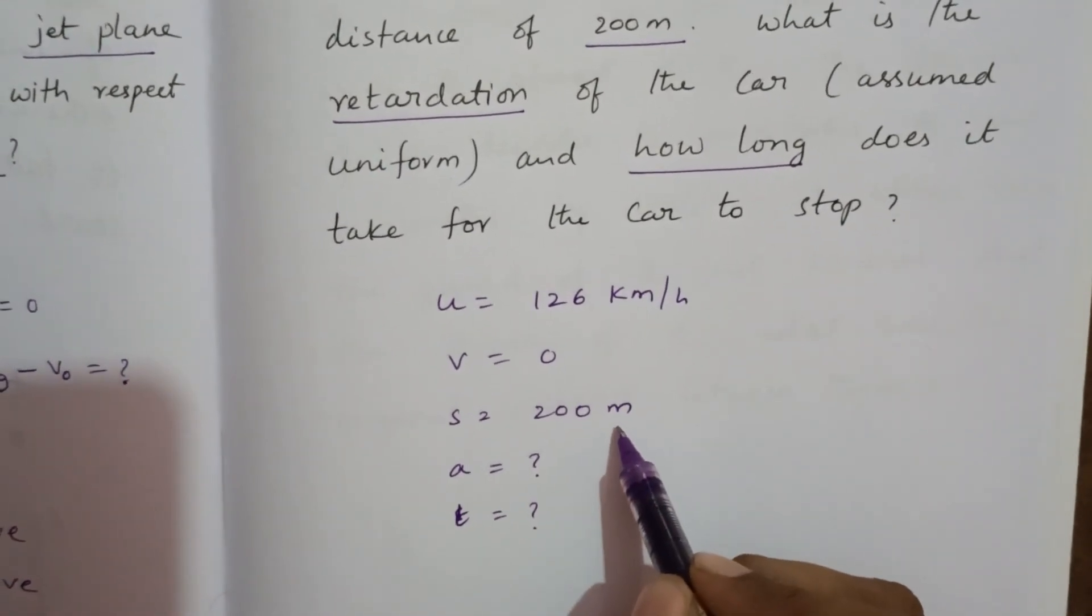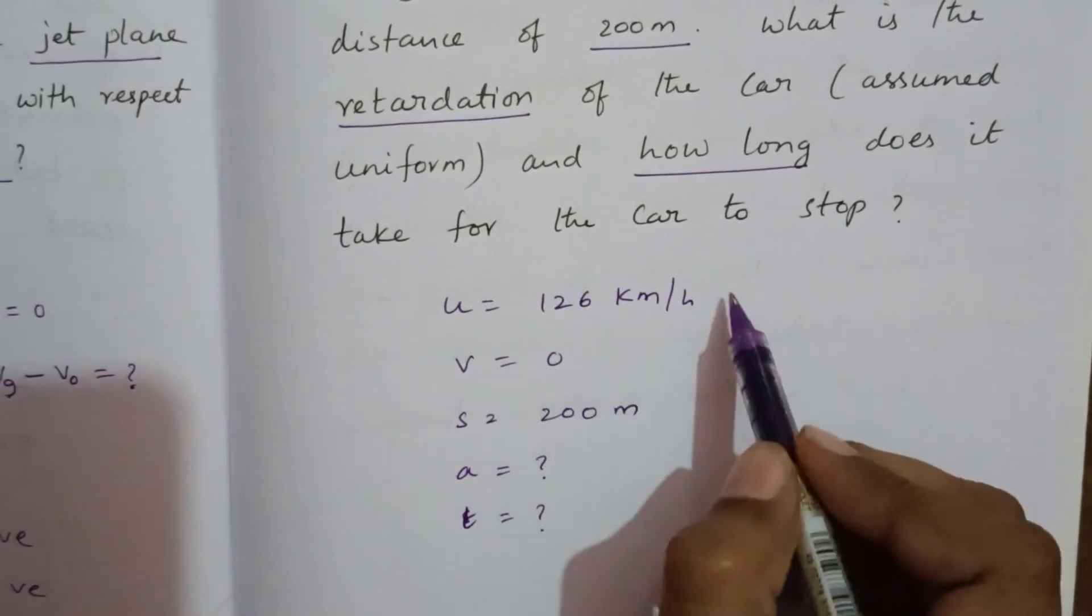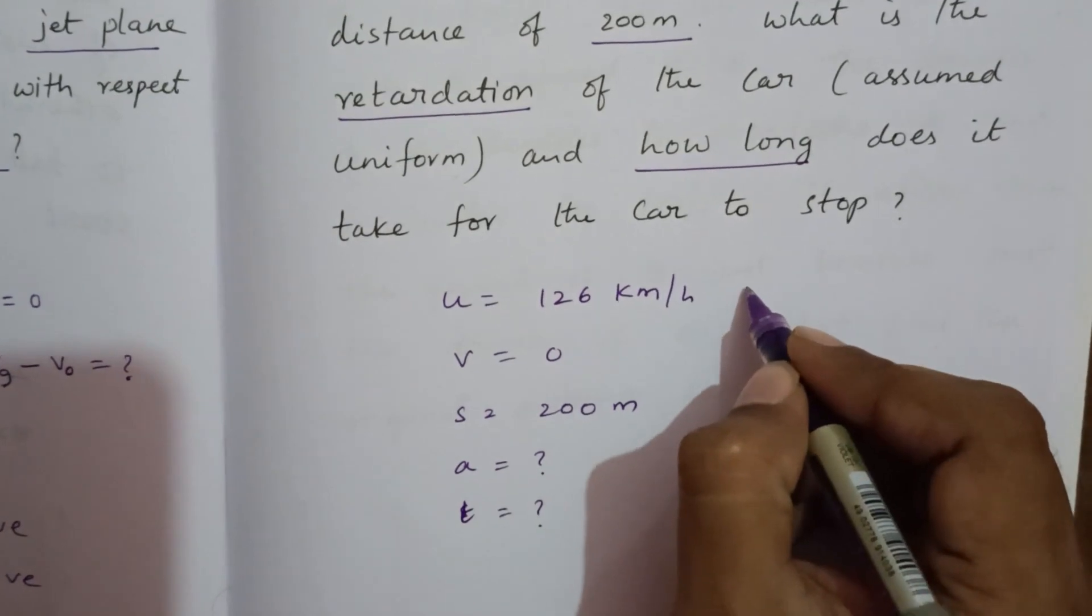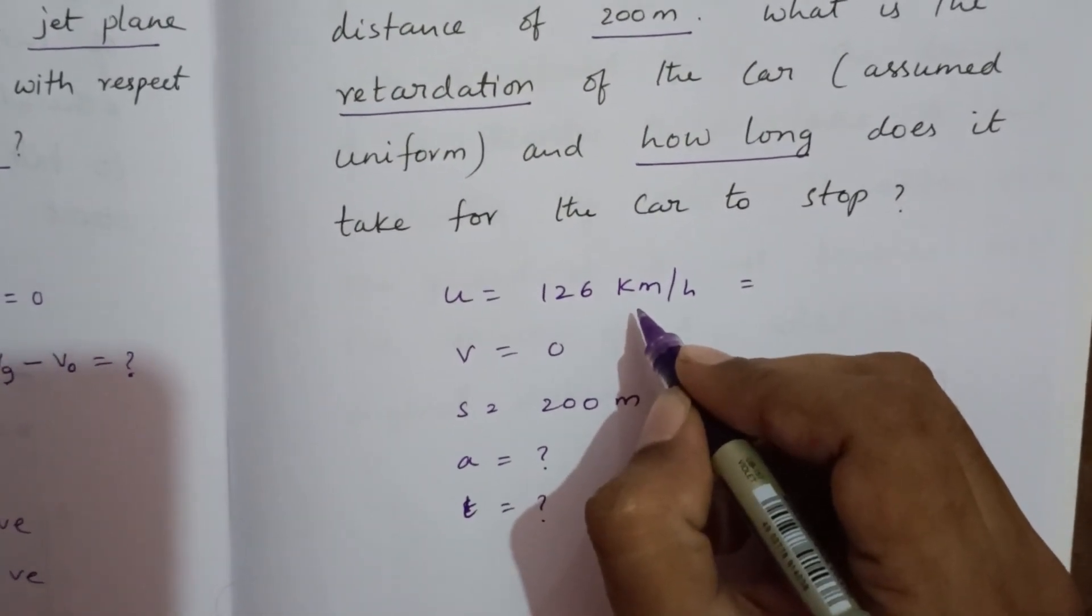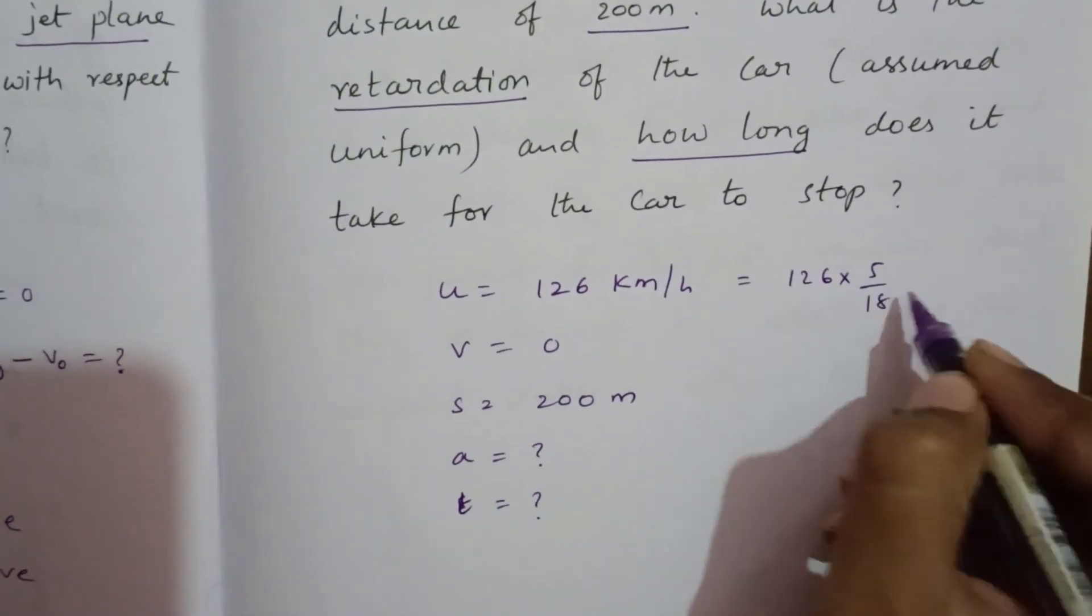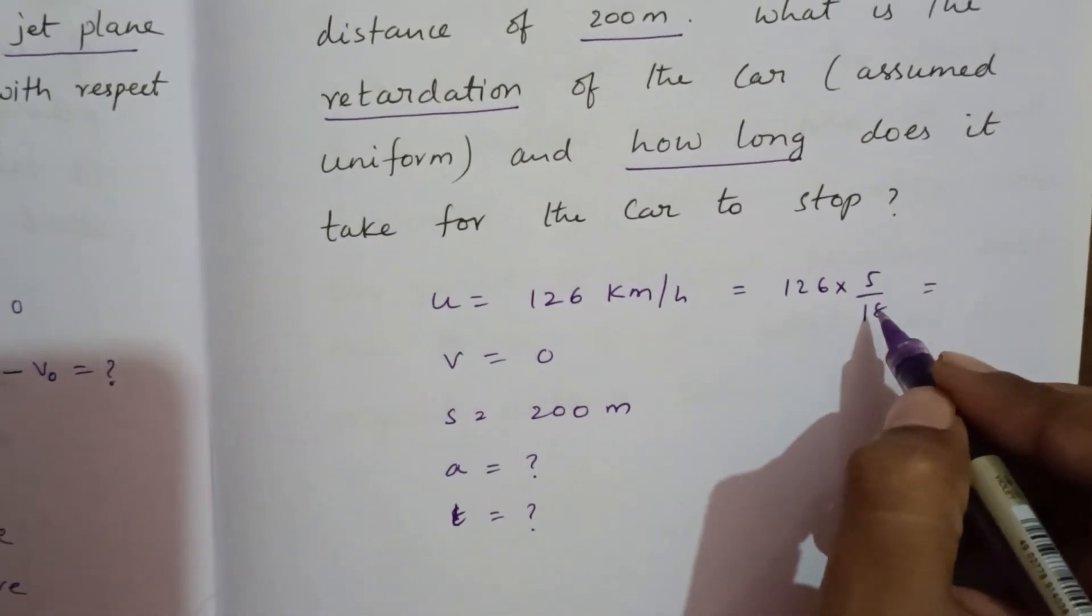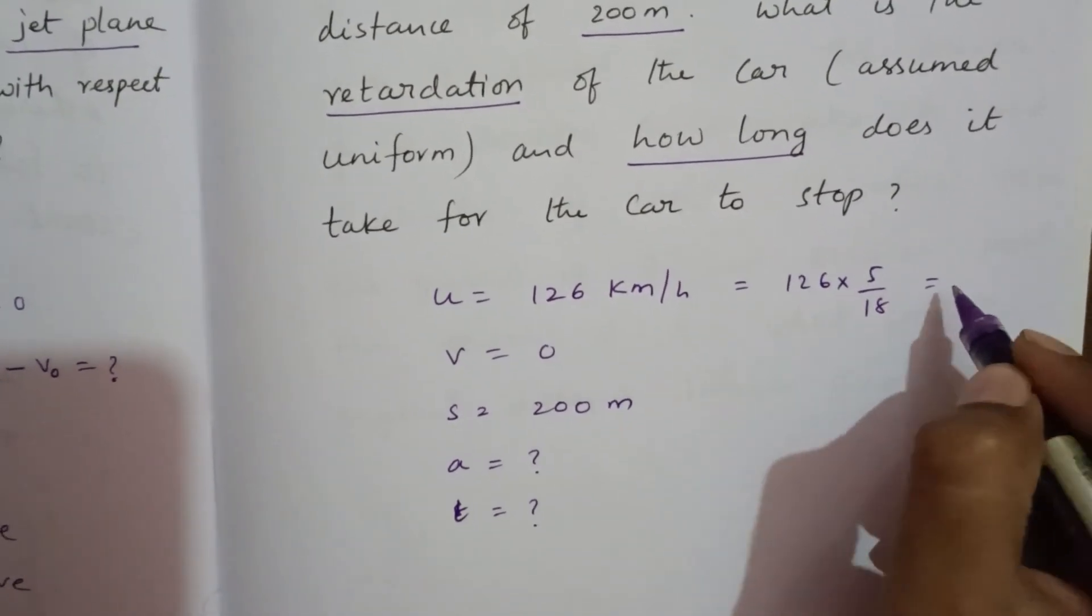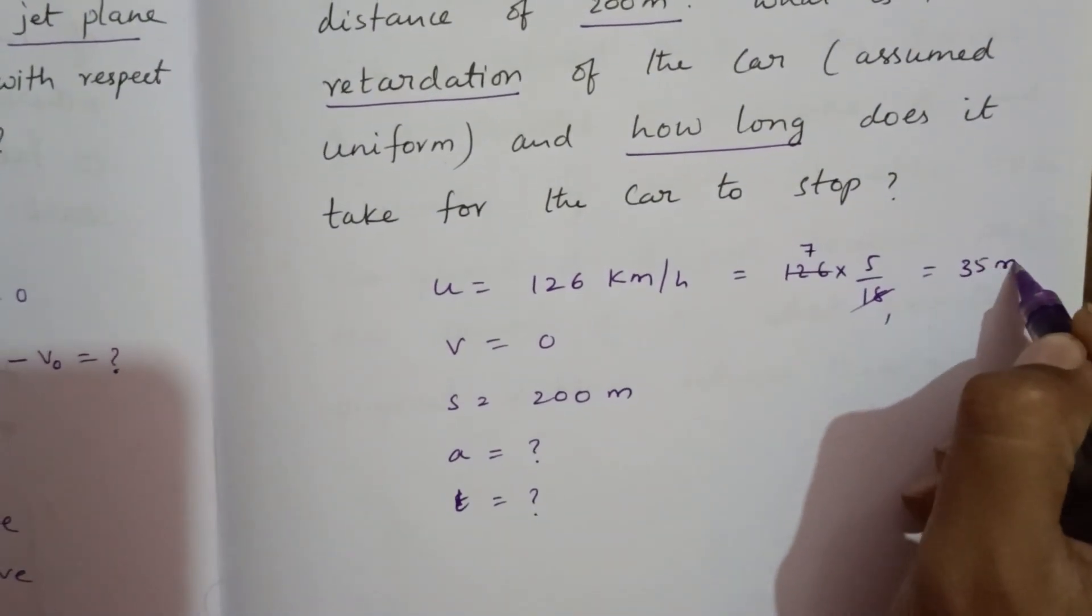Now here, distance is given in meters and velocity given in km per hour, so we should convert it into m per second. 1 km per hour equal to 5 by 18 m per second. So 126 into 5 by 18, seven times cancel, seven times five are 35 m per second.